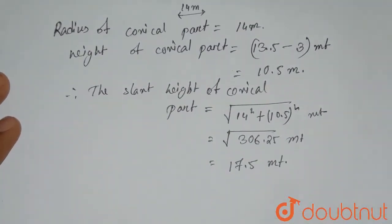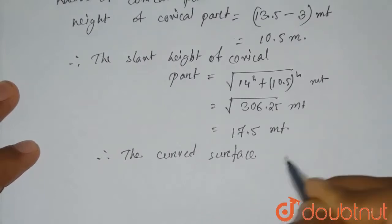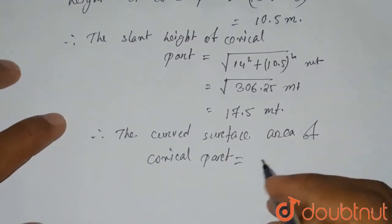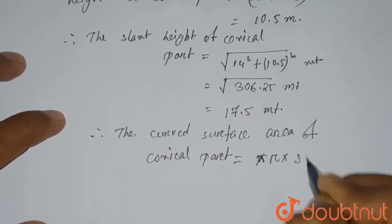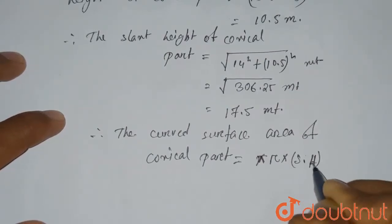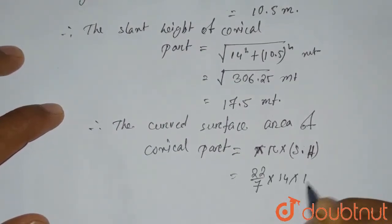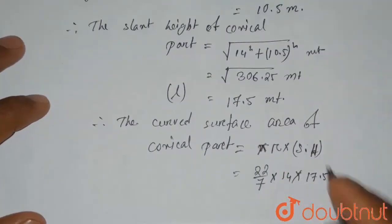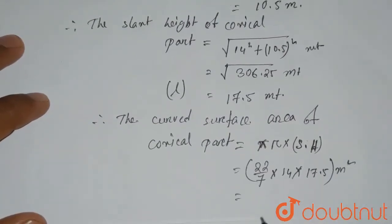So this is the slant height of the conical part. Therefore, the curved surface area of the conical part equals πrl, which is (22/7) × 14 × 17.5. The slant height is also denoted by L, so the formula is π r l. This gives us (22/7) × 14 × 17.5 = 770 square meters.